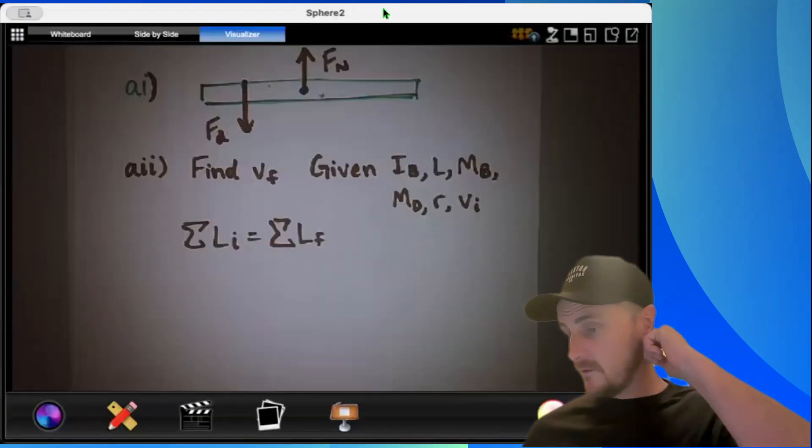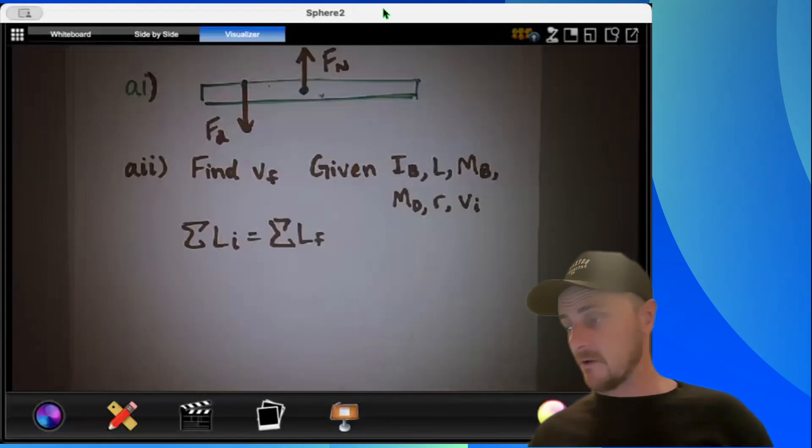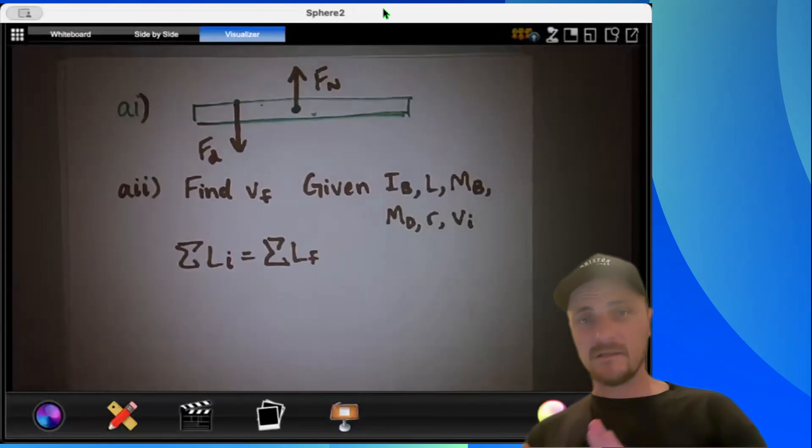Let's get cracking on this A2. We've got to find vf. We're given a bunch of stuff that we can express our answer in, and we have the conservation of angular momentum.